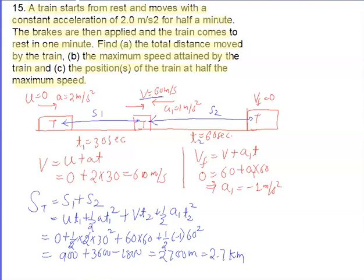That is the total distance covered by the train: 2700 meter or 2.7 kilometer. For the second part, the maximum speed attained by the train is 60 meter per second.